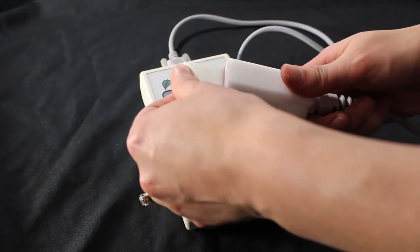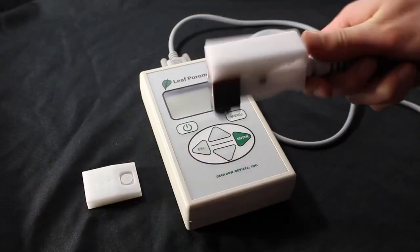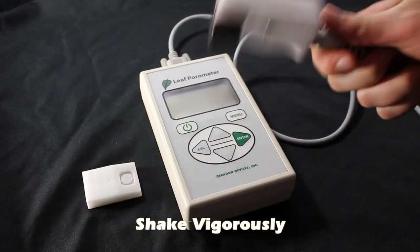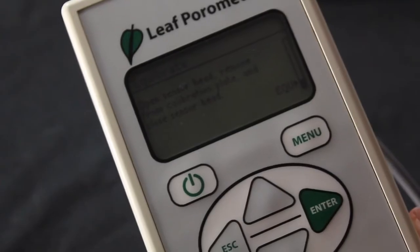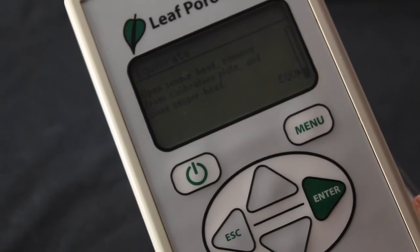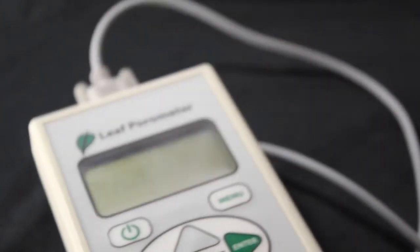After 30 seconds, the measurement will be completed, and the porometer screen will prompt you to equilibrate the two humidity sensors once more. Again, do this by waving the sensor head in a vertical motion in order for the bead inside the chamber to mix the air. Once the two sensors equilibrate, you will be prompted to attach the sensor head to the calibration plate and take a second equilibration measurement.